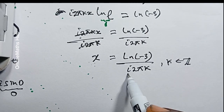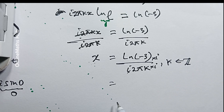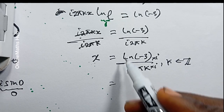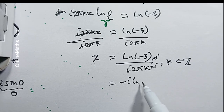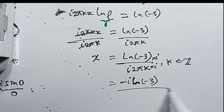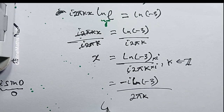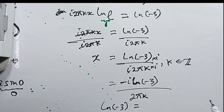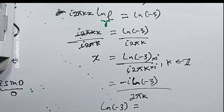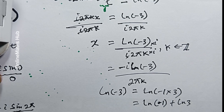We're not done yet because we can't leave i in the denominator. We multiply through by i: since i times i equals negative one, the minus sign moves to the numerator. So x equals negative i times the natural log of negative three, all divided by 2πk. Now we need to evaluate ln(-3), which doesn't exist in real numbers, so we write it as ln(-1 × 3) = ln(-1) + ln(3).